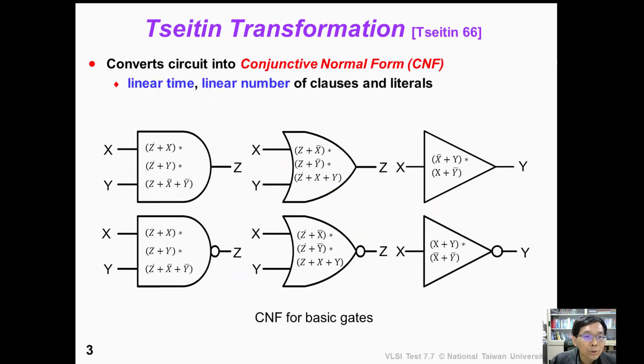If we want to use satisfiability to solve the ATPG problem, then we need to encode our circuit into Boolean formulas. So how can we do that?